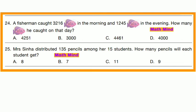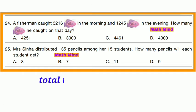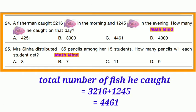Question No. 24: A fisherman caught 3216 fish in the morning and 1245 fish in the evening. How many fish did he catch that day? Total = 3216 + 1245 = 4461 fish. Option C is correct.